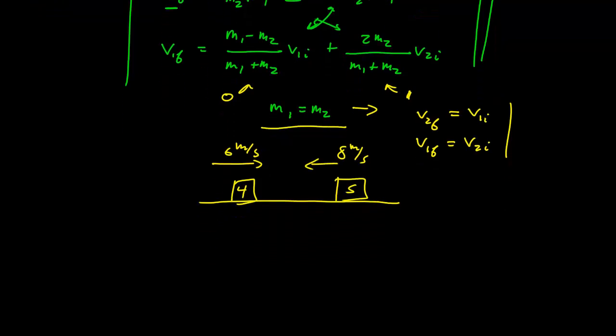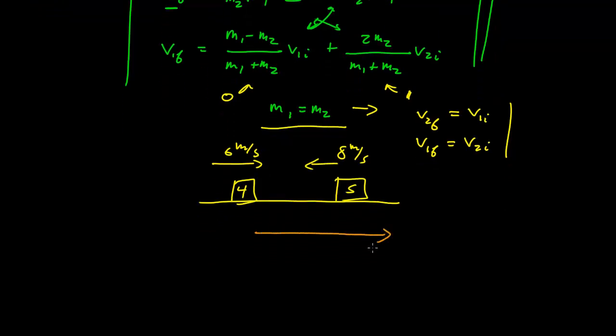Going towards each other means I have to worry about minus signs in my coordinate system. Let me establish positive x off to the right. That means the vector is going to be positive 6 meters per second. The velocity here will be negative 8 meters per second, because it's going in the negative x direction.